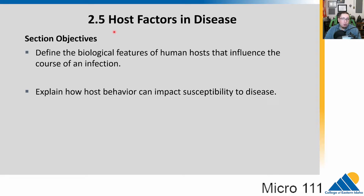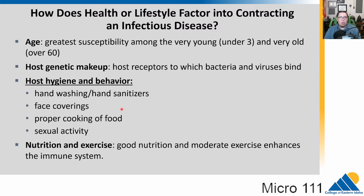In chapter 2.5, we're going to talk about host factors in disease — what things about the host might put them at risk for a disease. Particularly for humans, our behavior can impact susceptibility. How does health and lifestyle contribute to the probability of getting an infectious disease? There are several different factors; one of them is age.